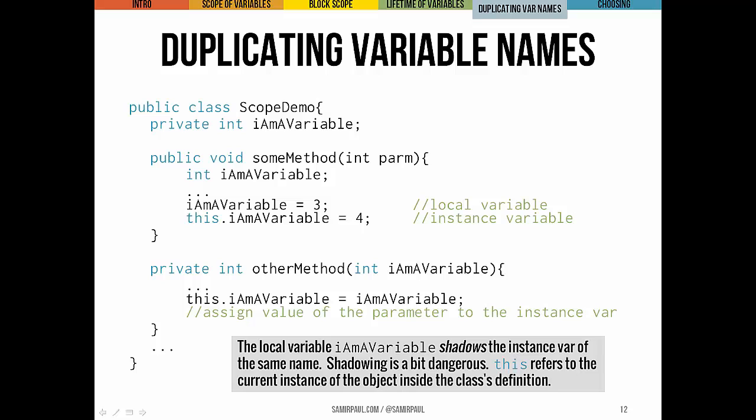Shadowing is dangerous because it makes it unclear which version we mean. If we refer to `iAmAVariable` without specifying, it defaults to the more local version. The only way to specify the instance variable is to use the prefix `this`, as in `otherMethod`. Here, we're saying `this.iAmAVariable = iAmAVariable` — setting the instance variable to the value of the formal parameter. This is legal but not great practice. The keyword `this` refers to the particular instance of the class we're in — it's an object's way of referring to itself.